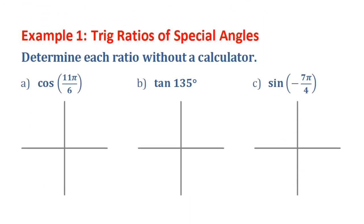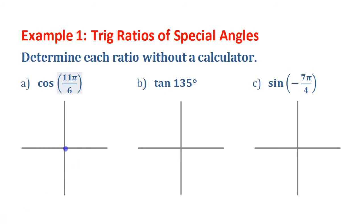Let's look at three examples. First, we're looking for the cosine of 11π/6. Before we tackle this, we should remember that we've looked before at how you can find the cosine of an angle in standard position using the intersection point with the unit circle. But here we're going to use one of those special triangles. 11π/6 is in quadrant 4, and the reference angle for that is π/6.